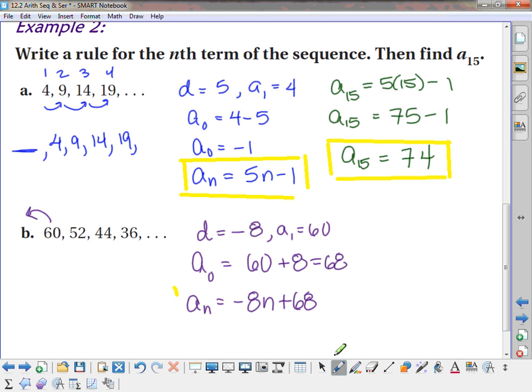And so a sub n is negative 8n plus 68. Now you can always double check that you did it right, because if you go back and you plug in 1, 2, 3, 4, you should get those terms. If I plug in a 1, I get 68 minus 8, which is 60. If I plug in a 2, I get 68 minus 16, which is 52. If I plug in a 3, I get 68 minus 24, which is 44. So it's working, right? You can always double check that it works by going back and plugging in 1, 2, 3, 4 and make sure it matches your sequence.